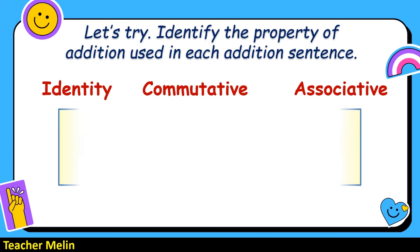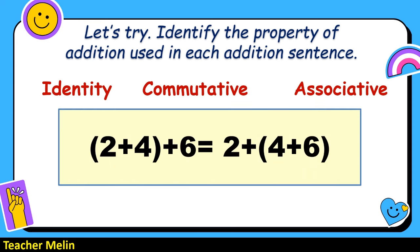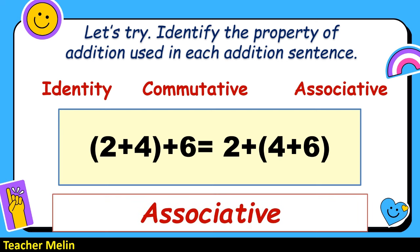How about this? 2 plus 4 plus 6 equals 2 plus 4 plus 6. On the left side, 2 and 4 are grouped. On the right side, 4 and 6 are grouped. The correct answer is associative — this is an associative property of addition.